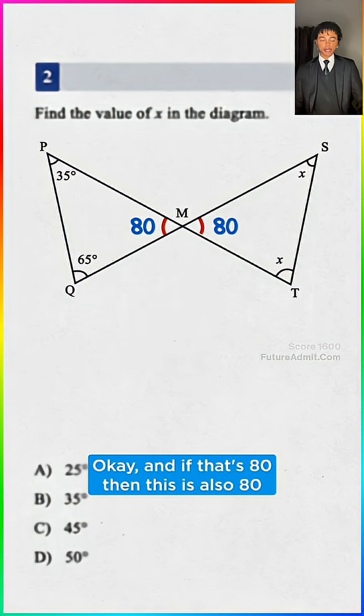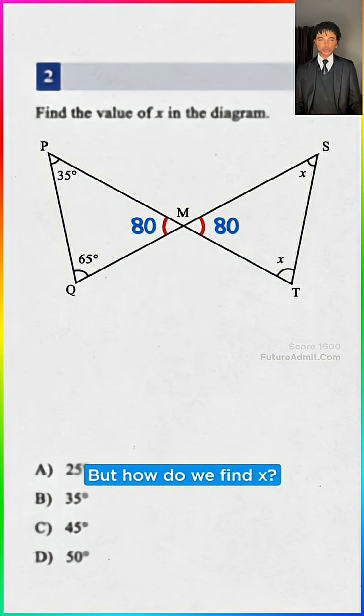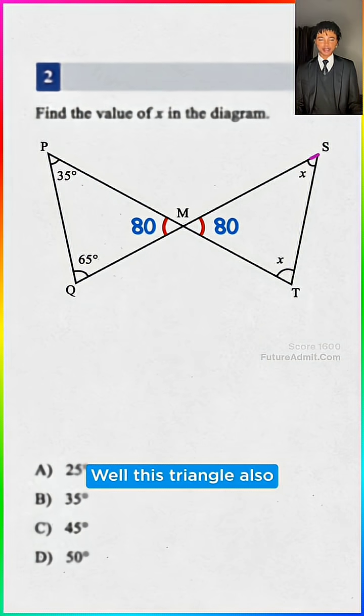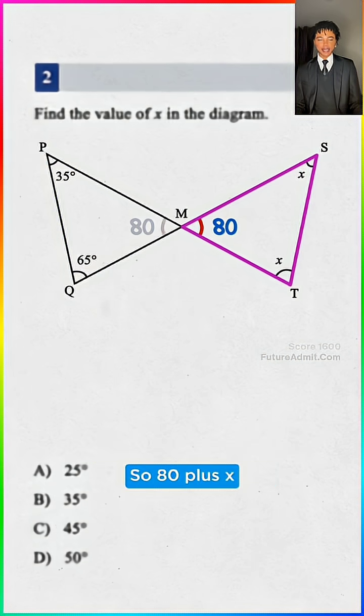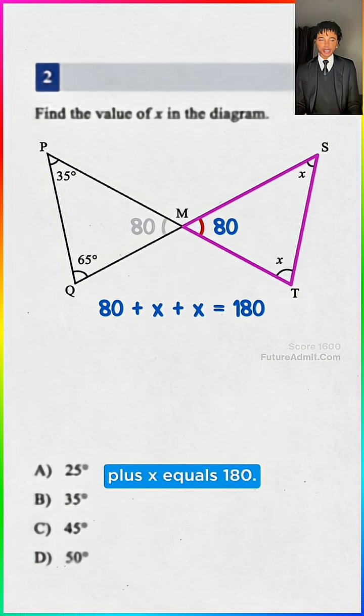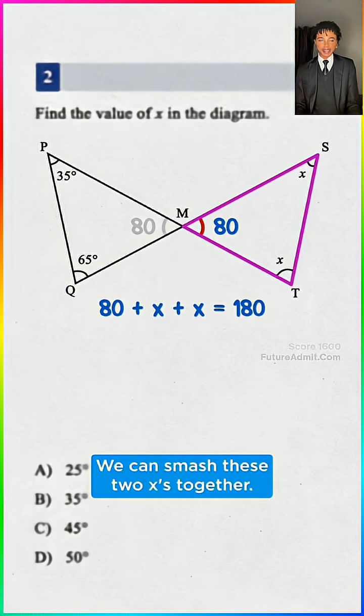And if that's 80, then this is also 80 because they're vertical angles, but how do we find x? Well, this triangle also has to add up to 180. So 80 plus x plus x equals 180. We can smash these two x's together.